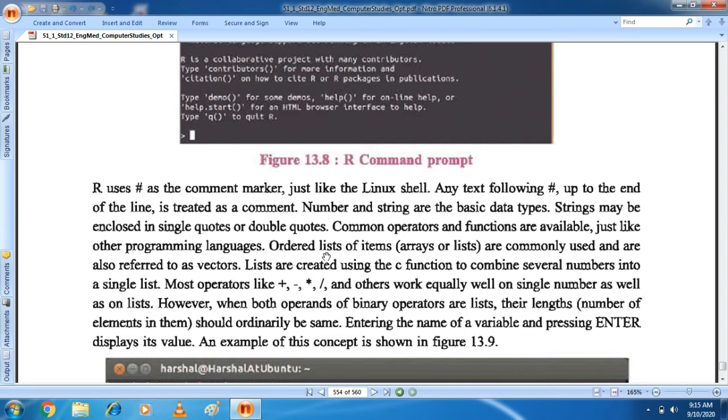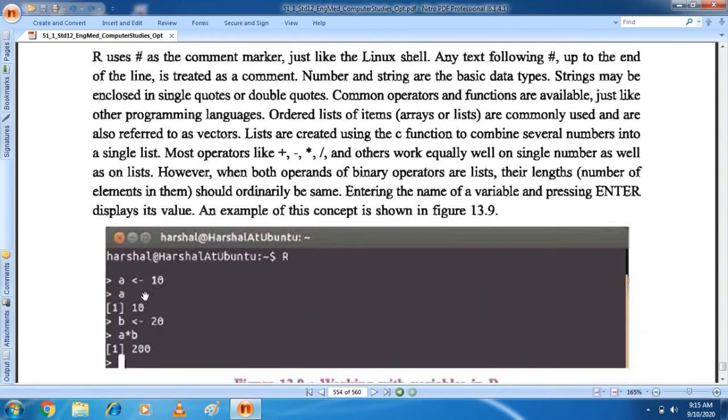Common operators and functions are available just like other programming languages. Ordered lists of items, arrays or lists are commonly used and are also referred to as vectors. Lists are created using the C function to combine several numbers into a single list. Student, if you have a number of lists, then you can write an array name. You can write Java and detail in Java. So what happens? Number of lists collection is a single list, it is executed. Most operators like plus, minus, multiply, divide and others work equally well on single number as well as on list. However, when both operands of binary operator are lists, their length, number of elements in them, should ordinarily be same.